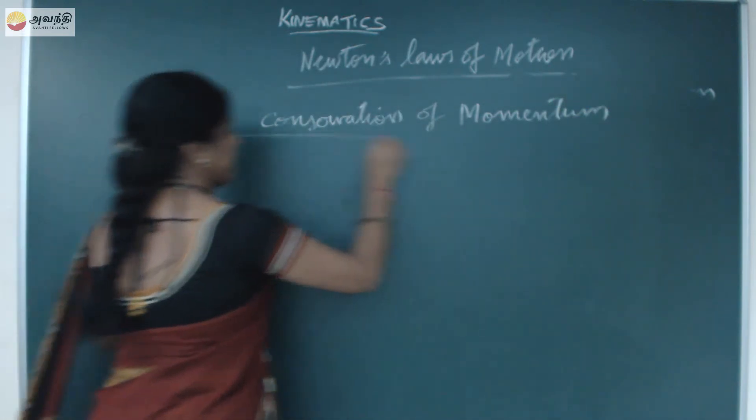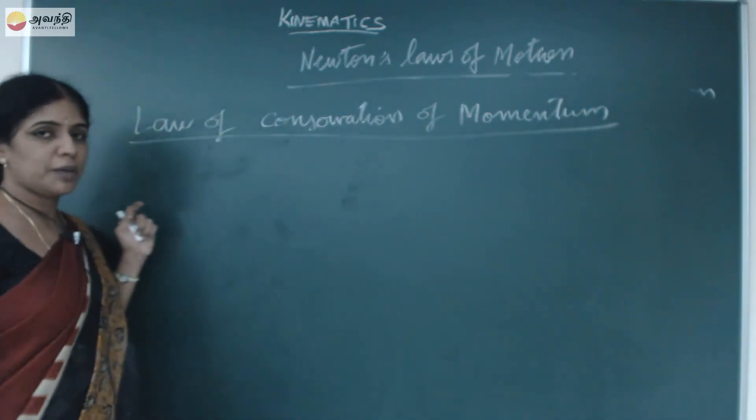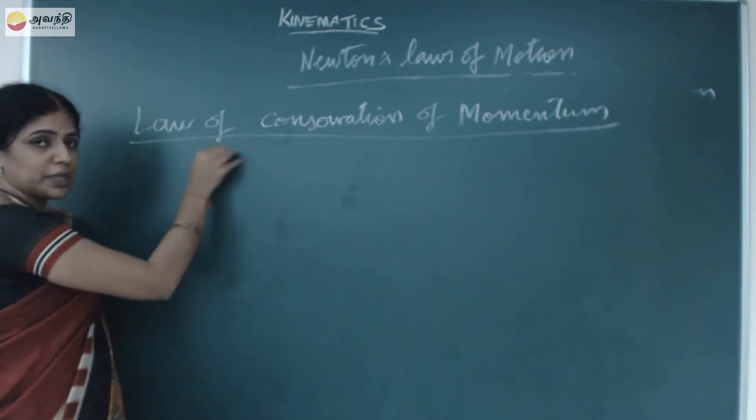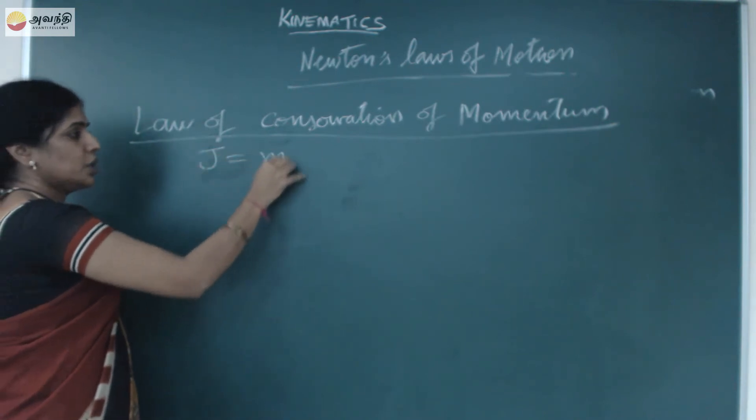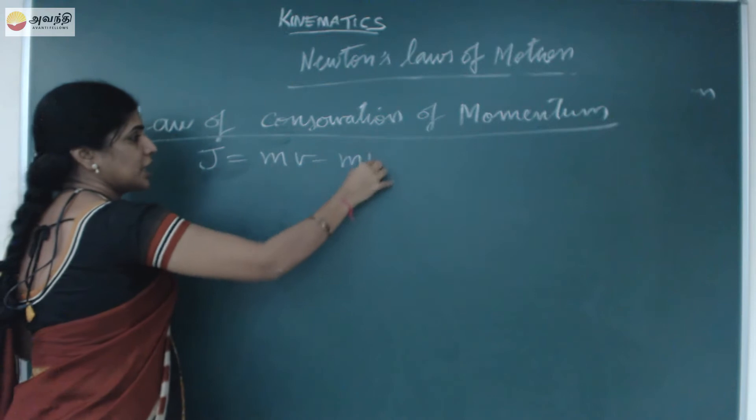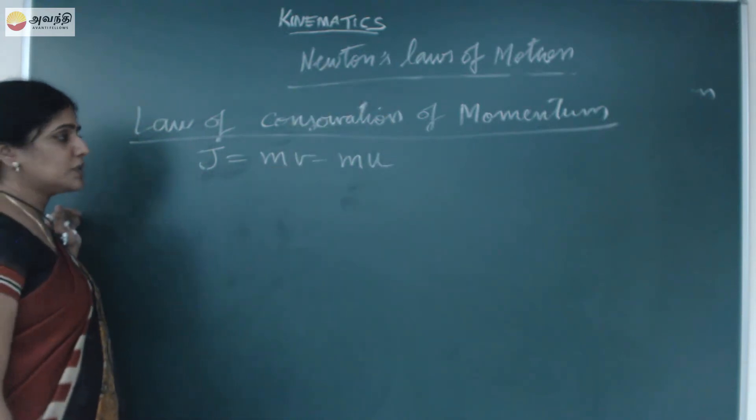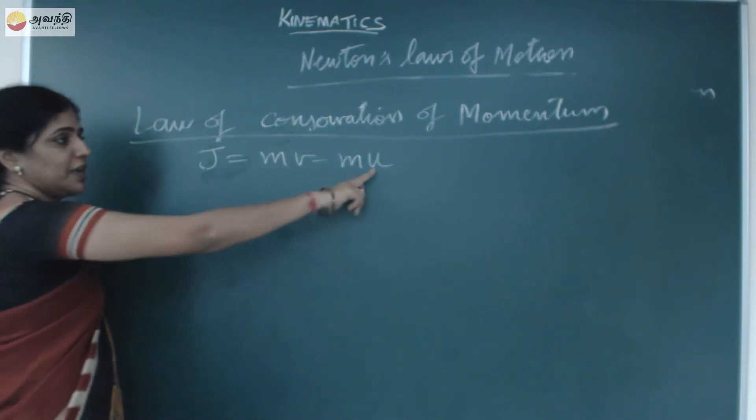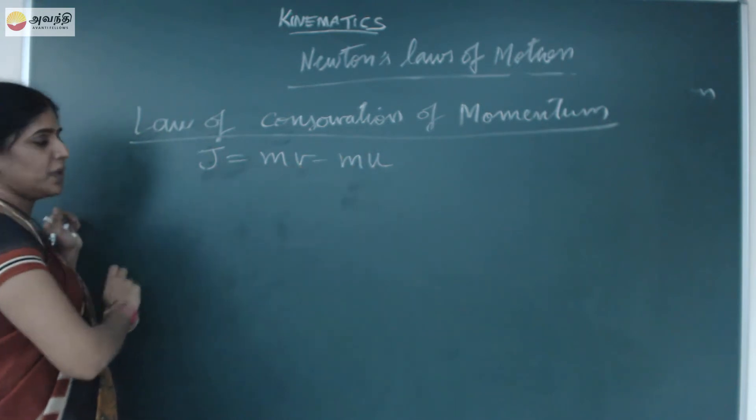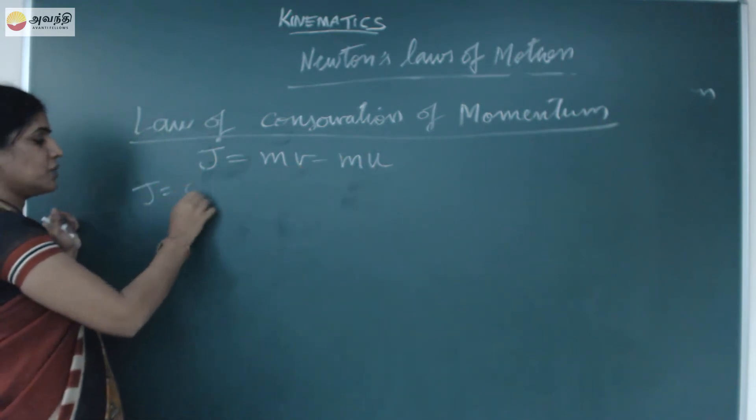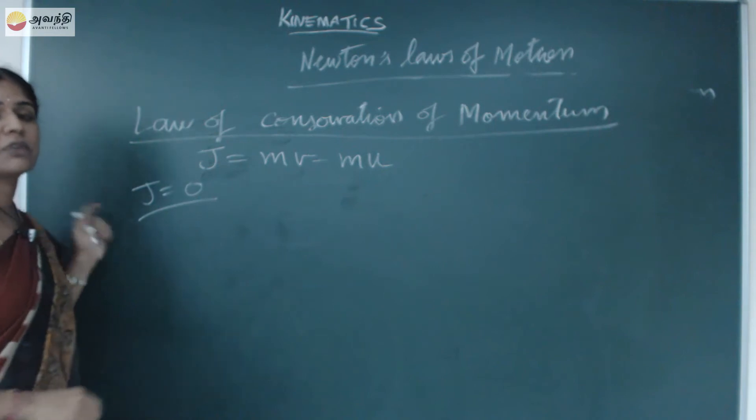We know that momentum, principle of impulse and momentum. What we have seen in the principle of impulse and momentum: J equals mv minus mu. When an object moves with initial velocity u and final velocity v, when there is no external force acting on it, J equals zero.